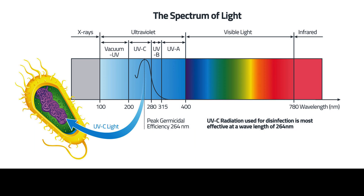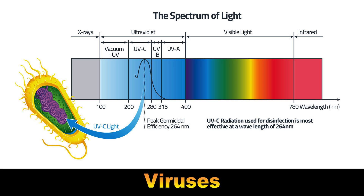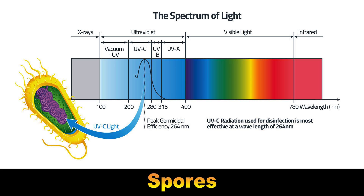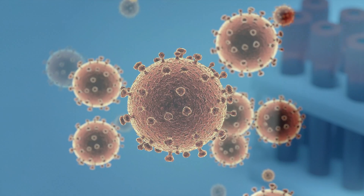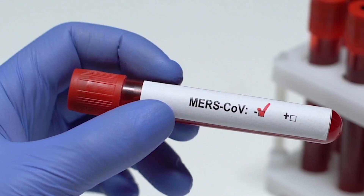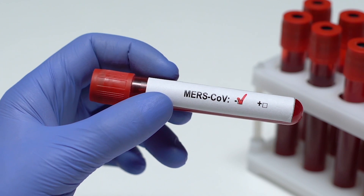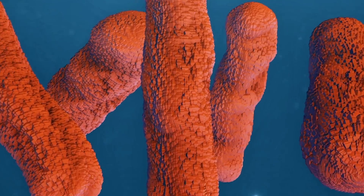Specifically, the UVC range, which covers wavelengths ranging from between 200 nanometers and 280 nanometers, is capable of eliminating viruses, bacteria, mold, and spores — including the COVID-19 coronavirus, severe acute respiratory syndrome, Middle East respiratory syndrome, E. coli, yeast, and more.